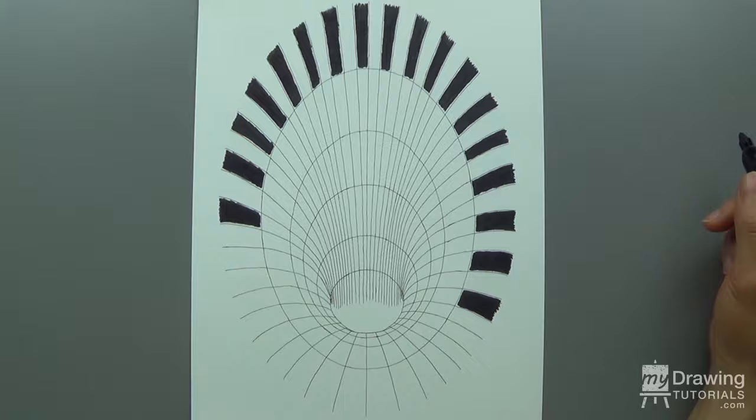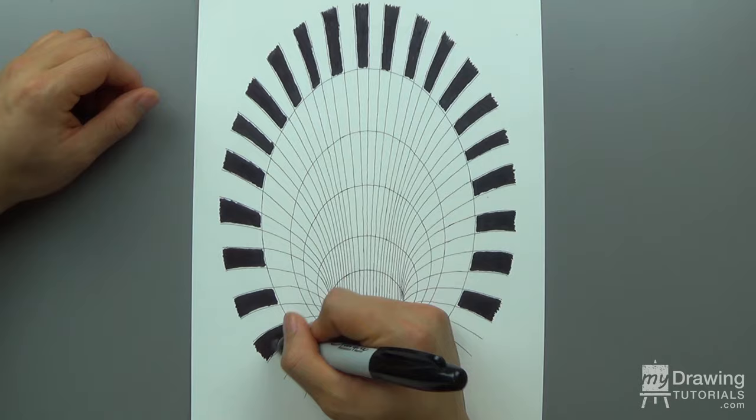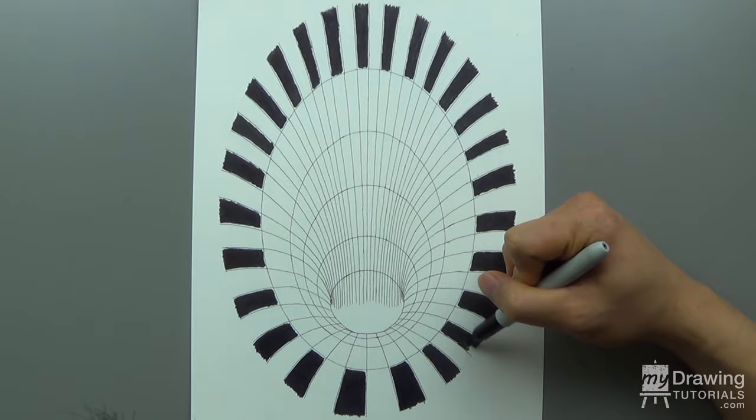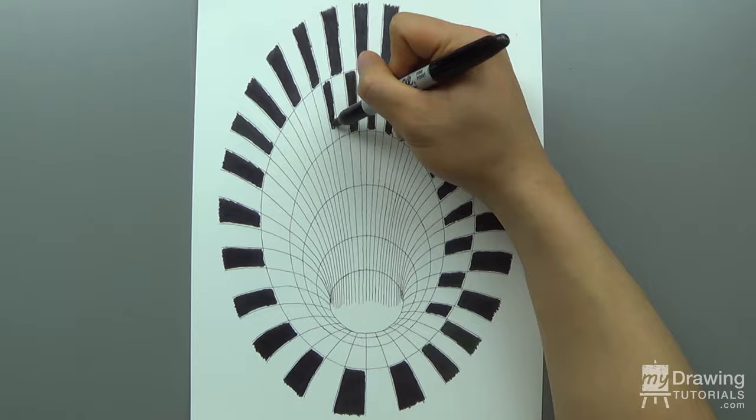The large stripe marker won't be able to color in the squares all the way to the edge, so we'll just go as close to the edge as we can for now. Continue doing this for all the circles.